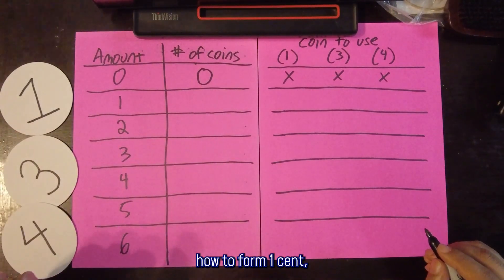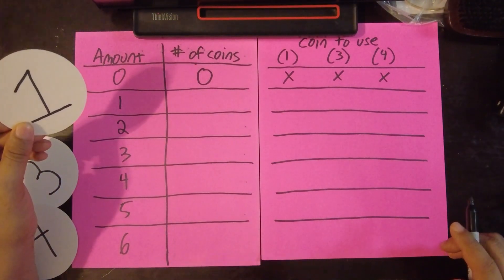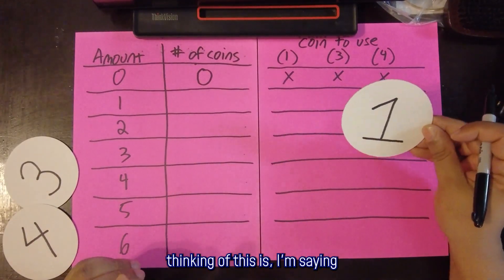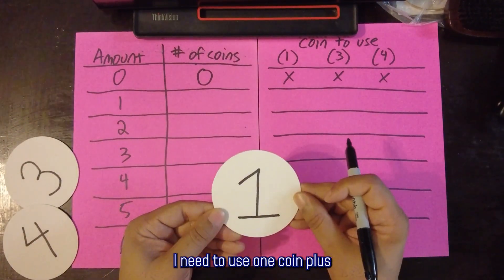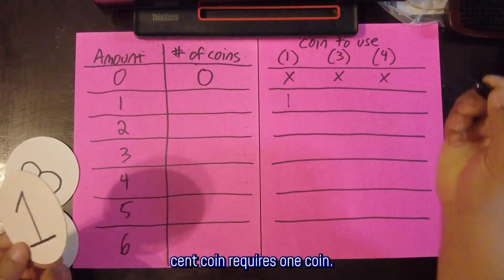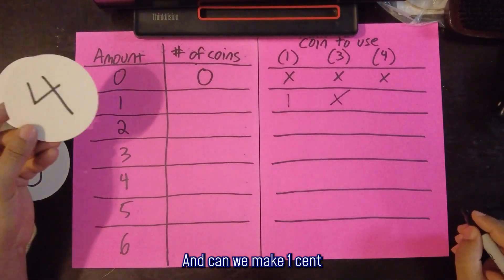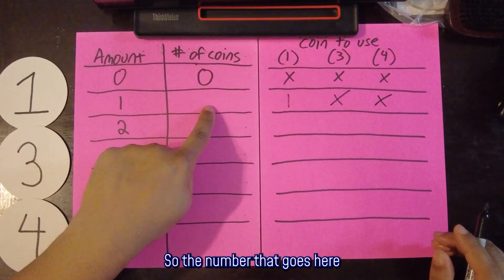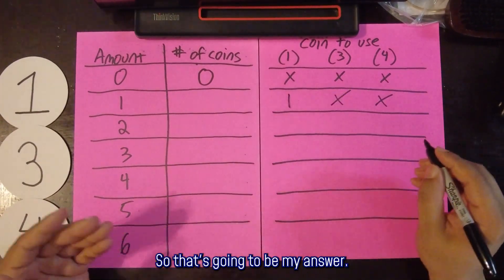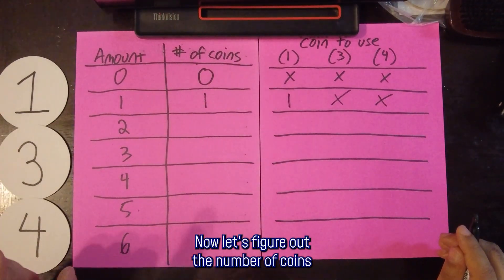Now let's determine how to form 1 cent, trying each coin. Can I make 1 cent using the 1-cent coin? Yes — by starting with zero cents and adding a single 1-cent coin, so one coin plus zero coins equals one. Can I make 1 cent using the 3-cent coin? No. Using the 4-cent coin? No. The minimum of these values is one, so the minimum number of coins to make 1 cent is one coin.